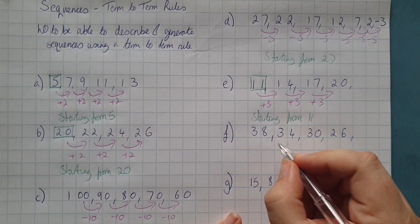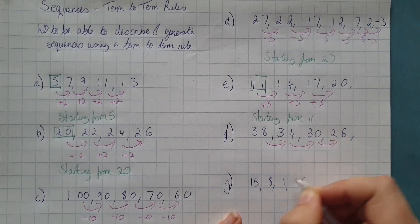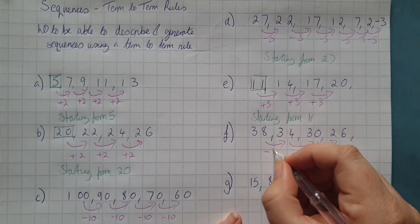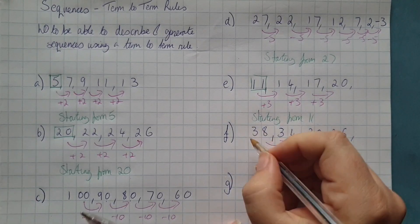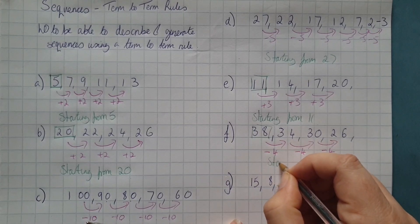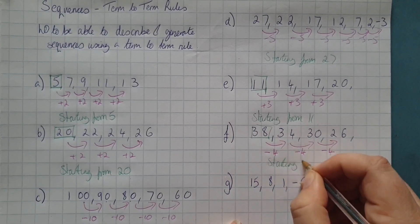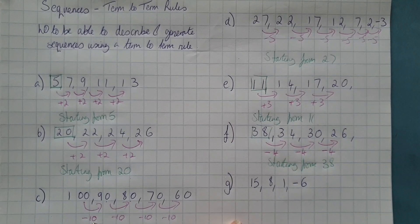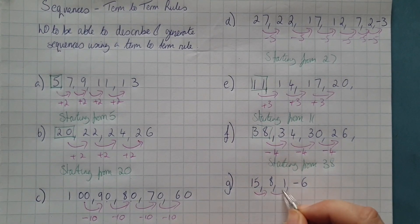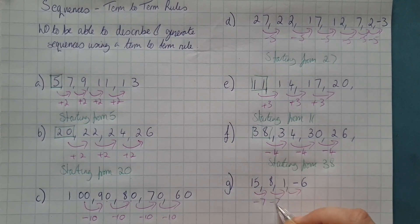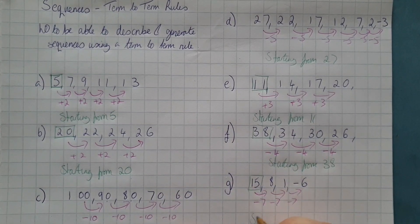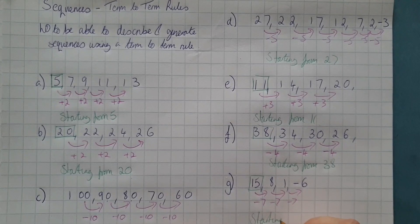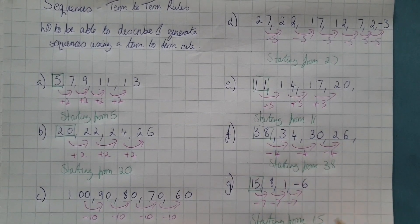Next sequence: we are going down, and we're subtracting four. And again, where are we starting from? For the final one, this time we're subtracting seven and we're going into negative numbers. And again, look where we start — 15.